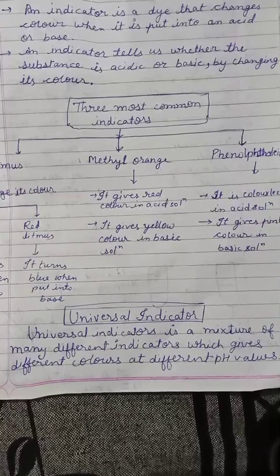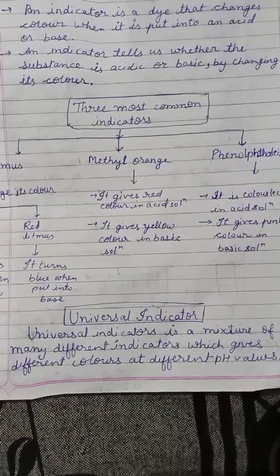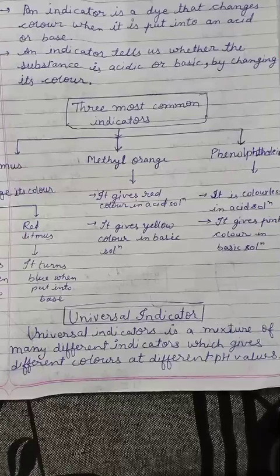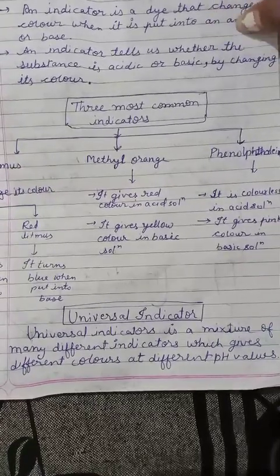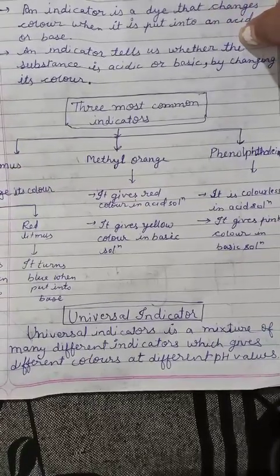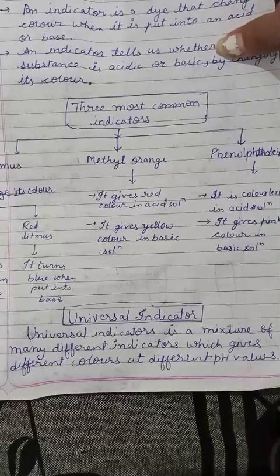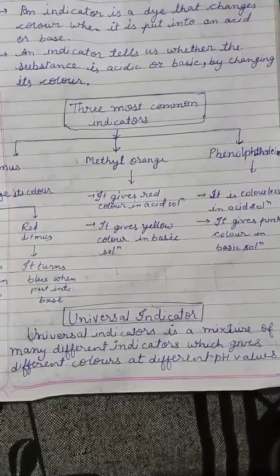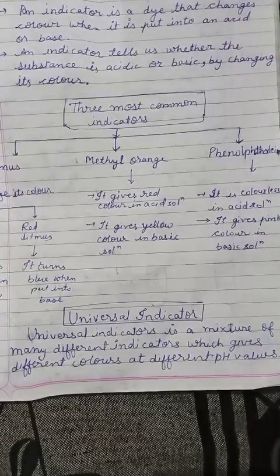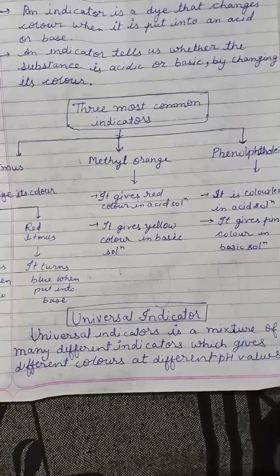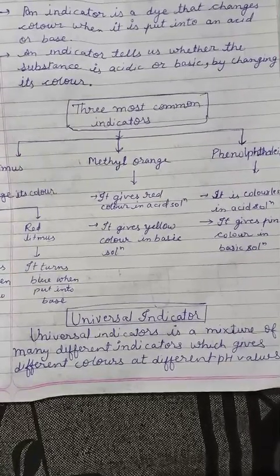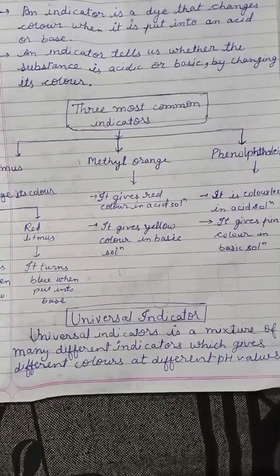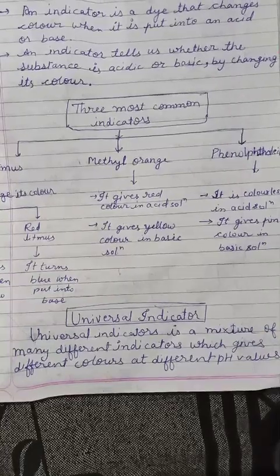The universal indicator gives different colors at different pH values. So if we test our pH values, it will give us a whole chart. We can match our pH values using this chart to determine the pH of our substance.